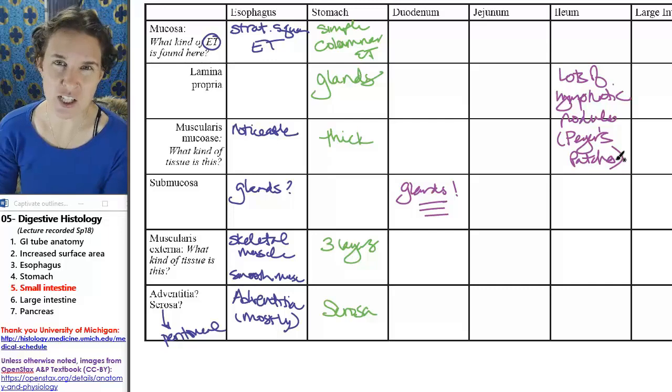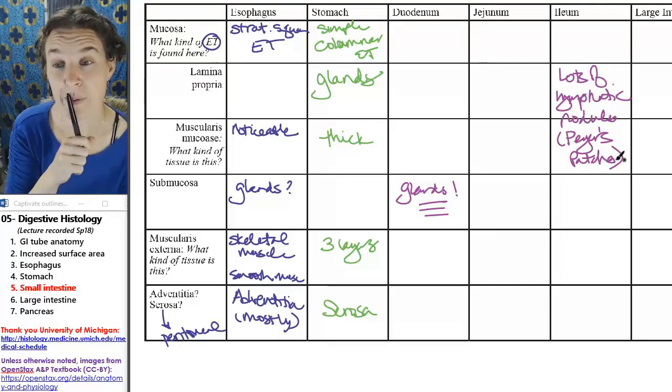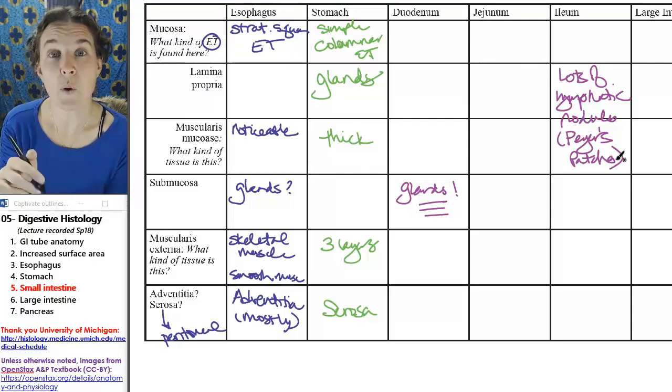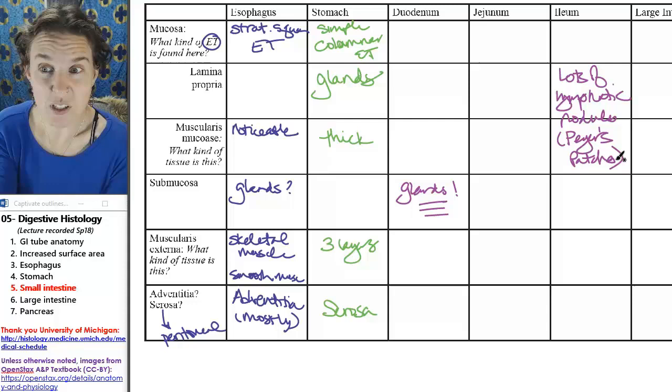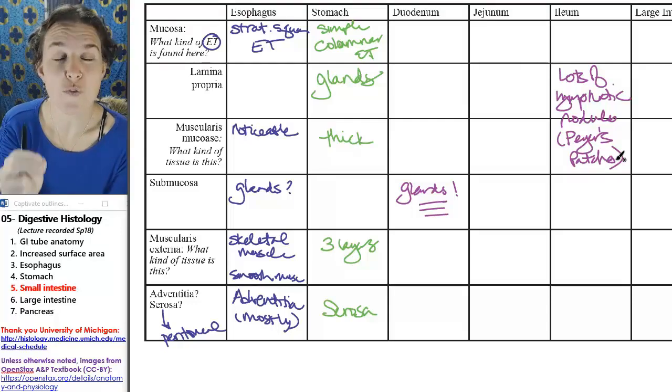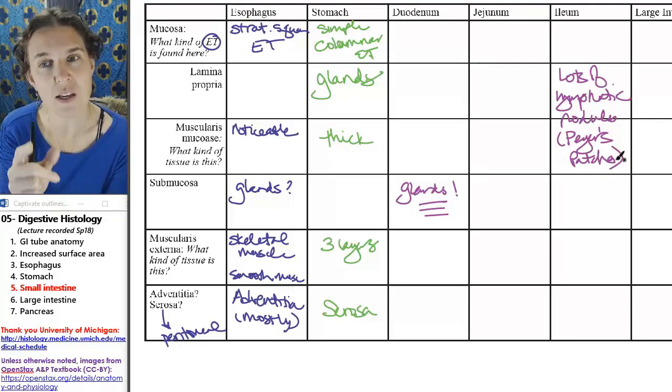Sometimes the large intestine also has lots of lymphatic nodules. Well, we'll save the large intestine for the next one. So look for lots of lymphatic nodules—you're in the ileum. Look for crazy amounts of glands in the submucosa—you're in the duodenum.